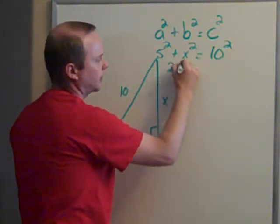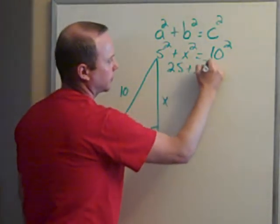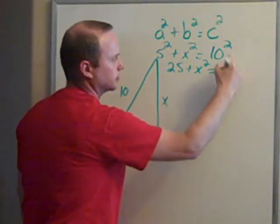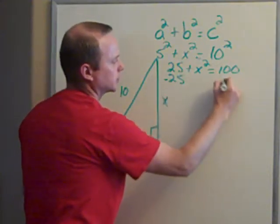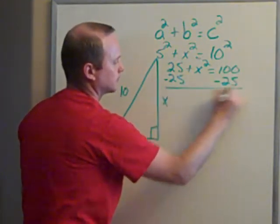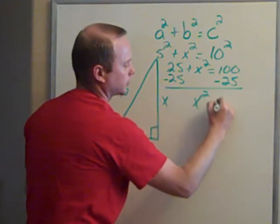So this is going to be 25 plus X squared equals 100. 10 squared is 100. I subtract 25 from both sides. X squared equals 75.